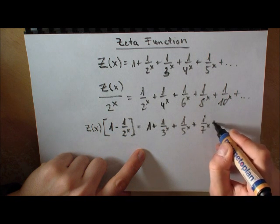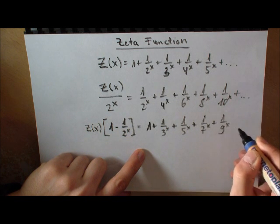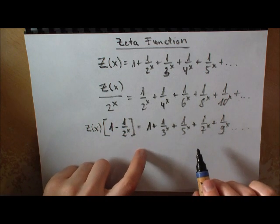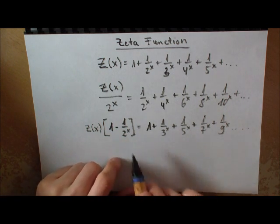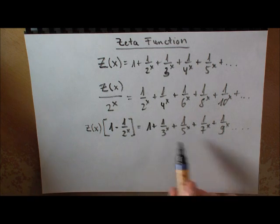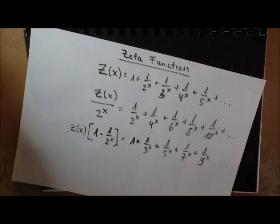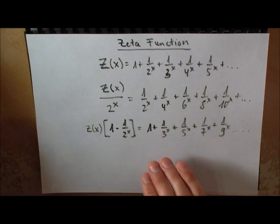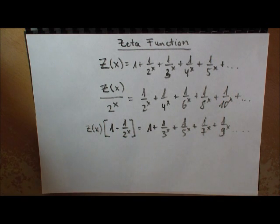What he got was Z(x) times bracket 1 minus 1 over 2^x. Now, what was left here? It was 1 plus 1 over 3 to the x plus 1 over 5 to the x. So you can see all these numbers were subtracted here in the other sum. So what is left is 6 is away, so 7 to the x plus 1 to the 9 to the x and so forth. So all these numbers that are relatively prime to 2, these are just the odd numbers.